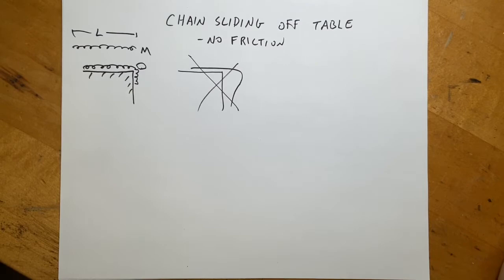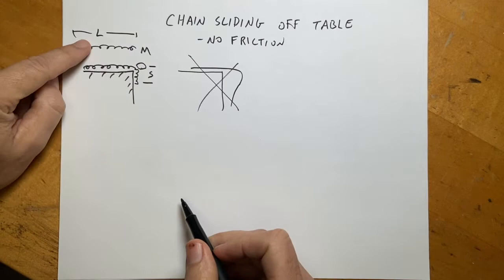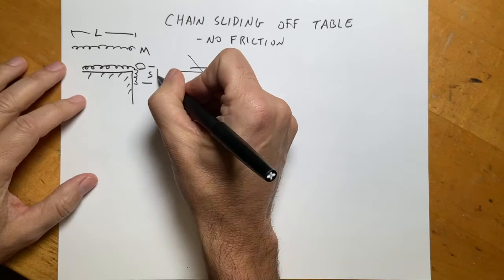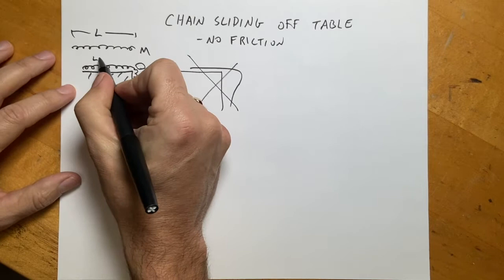Let me define my variables. I'm going to call s the distance — that's how much of the chain is hanging over the table. The chain has total length l and mass m. So s is the amount that hangs over the table, and that's my variable. Since s hangs over, the length on the table is l minus s.